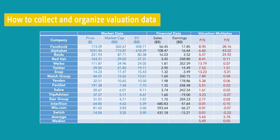Here is how we can organize data for Facebook and its peers. We have two categories of data. First, we have the market data. Price is the most current share price. Market capitalization can be used to calculate the number of common shares outstanding by dividing it by share price — we need this for estimating earnings per share and sales per share. Enterprise value can be used in some cases if we intend to estimate firm value. The main sources of market data are stock markets.